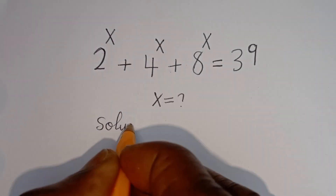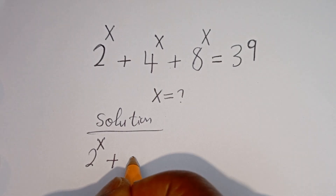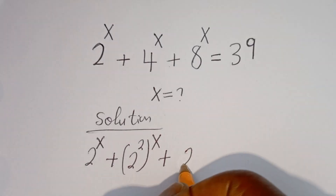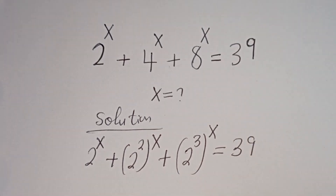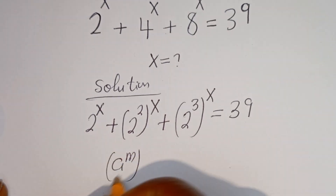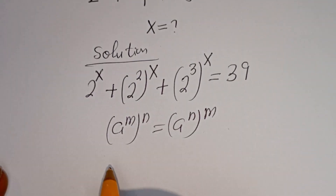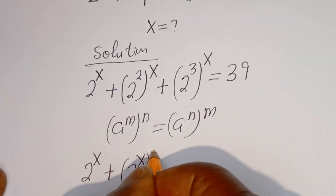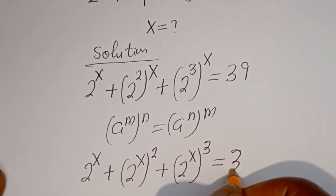Solution. Here we have 2 to the power of S, plus 4 to the power of S — which can be written as 2 squared to the power of S — plus 8 to the power of S, which can be written as 2 to the power of 3 to the power of S, is equal to 39. This gives us 2 to the power of S, plus 2 to the power of S squared, plus 2 to the power of S cubed, is equal to 39.